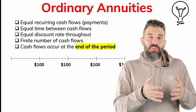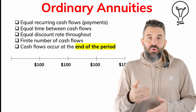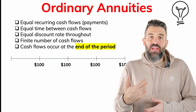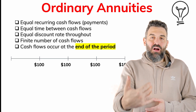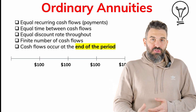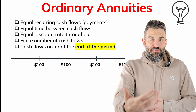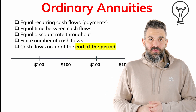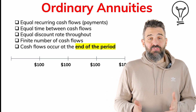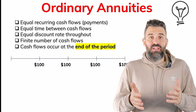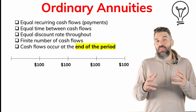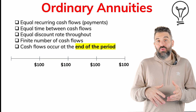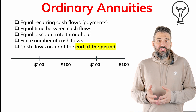An ordinary annuity is one where the cash flows or payments occur at the end of the period. So $100 every year at the end of each year for four years would be an example of an ordinary annuity. To find the present value or future value of an ordinary annuity, there are some key formulas you want to know.